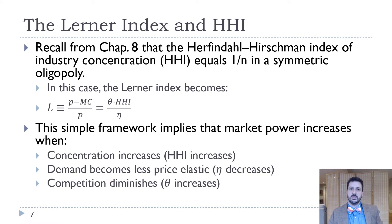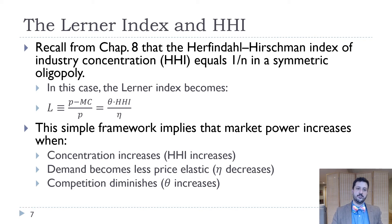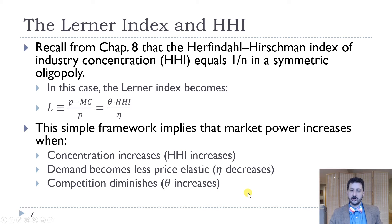Another measurement of market concentration is the Herfindahl-Hirschman Index (HHI), which equals one over N in a symmetric oligopoly. In this case the Lerner Index equals theta times HHI over eta. So market power increases as concentration increases (higher HHI), demand becomes less price elastic (lower eta), or competition diminishes (higher theta) — all of which increase firms' ability to charge a price above marginal cost.